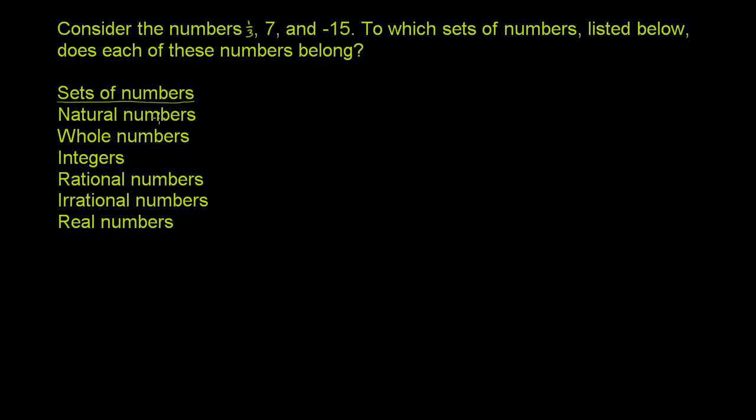So natural numbers, you can kind of view these as the counting numbers. This is 1, 2, 3, 4, 5, 6. Or another way to think about it is the whole numbers except for 0. So 0 is not in the natural numbers. It starts at 1, 2, 3, 4, so on and so forth.